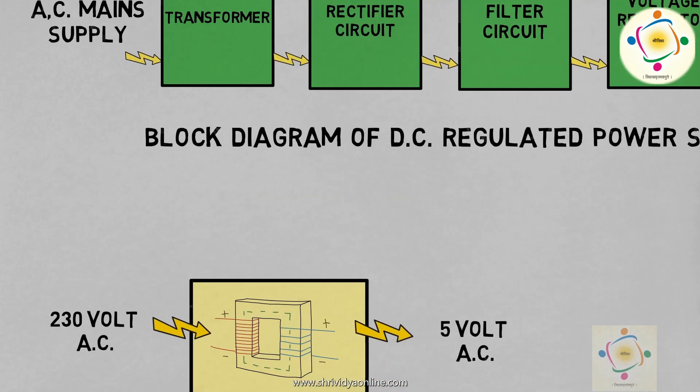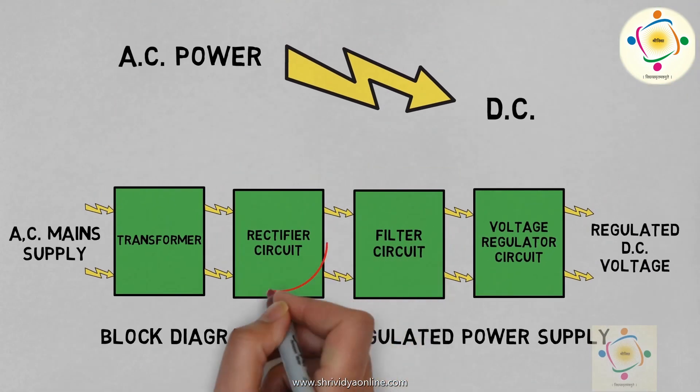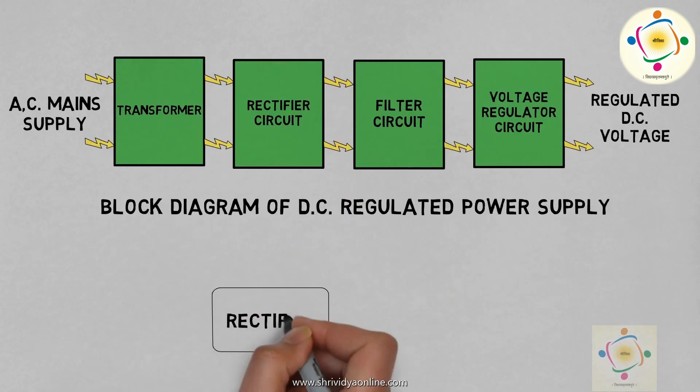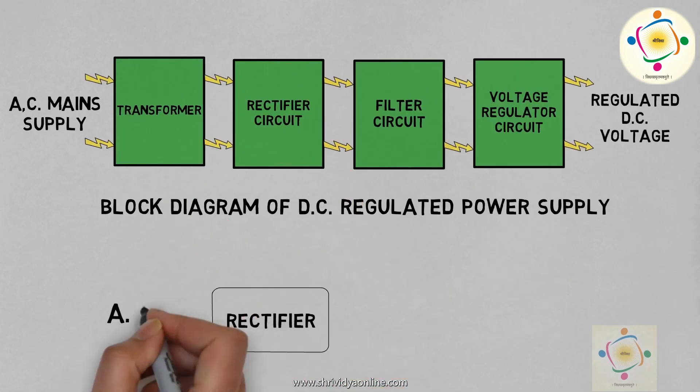The next device is called a rectifier. This converts AC into pulsating DC.